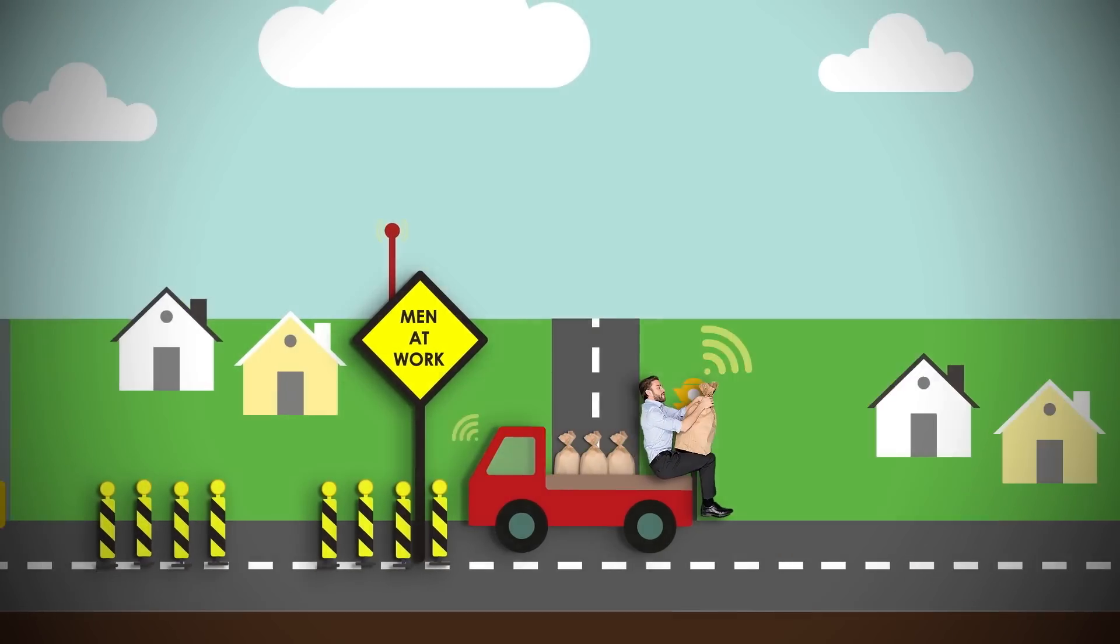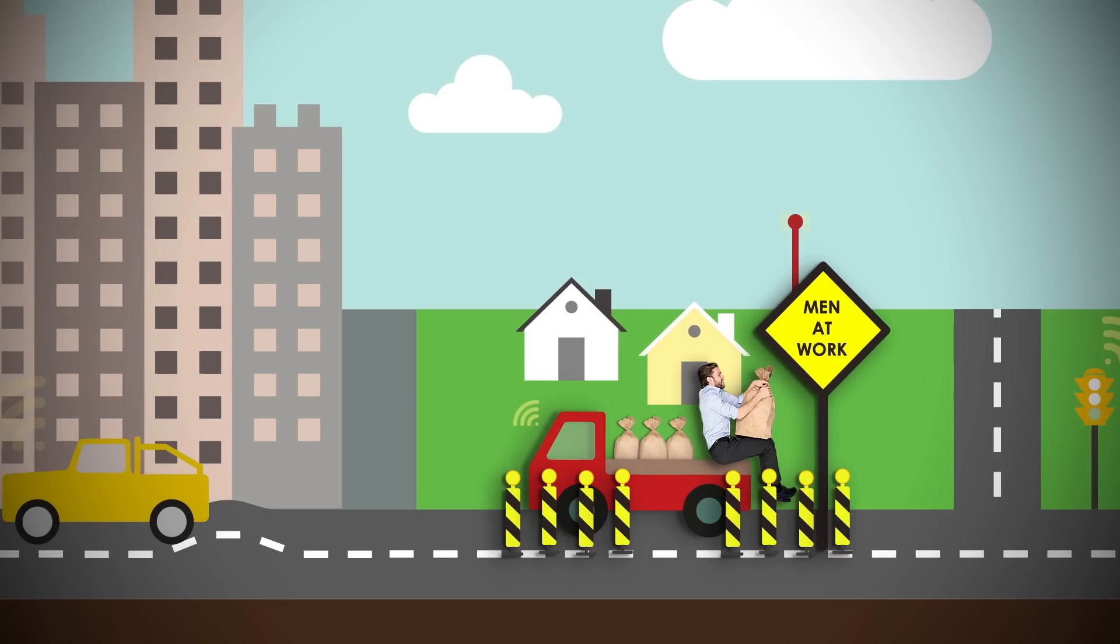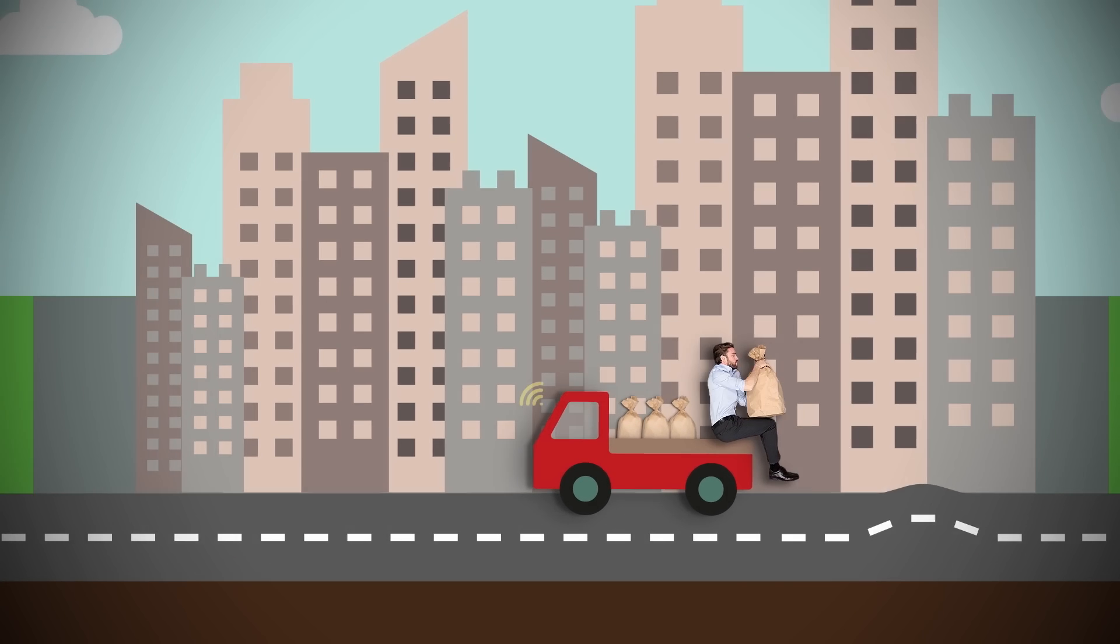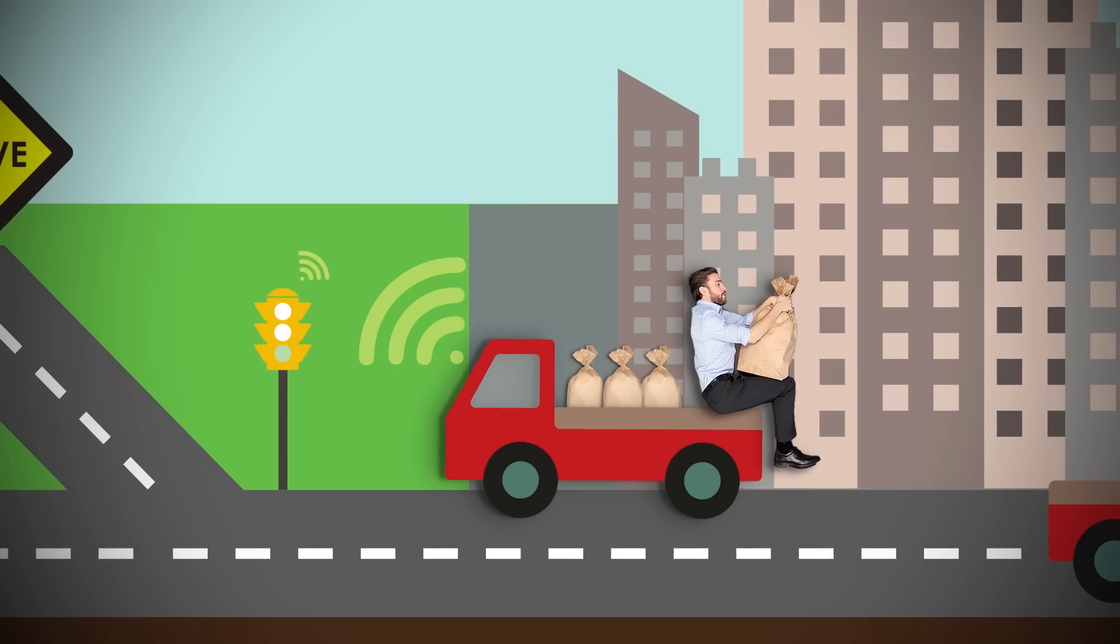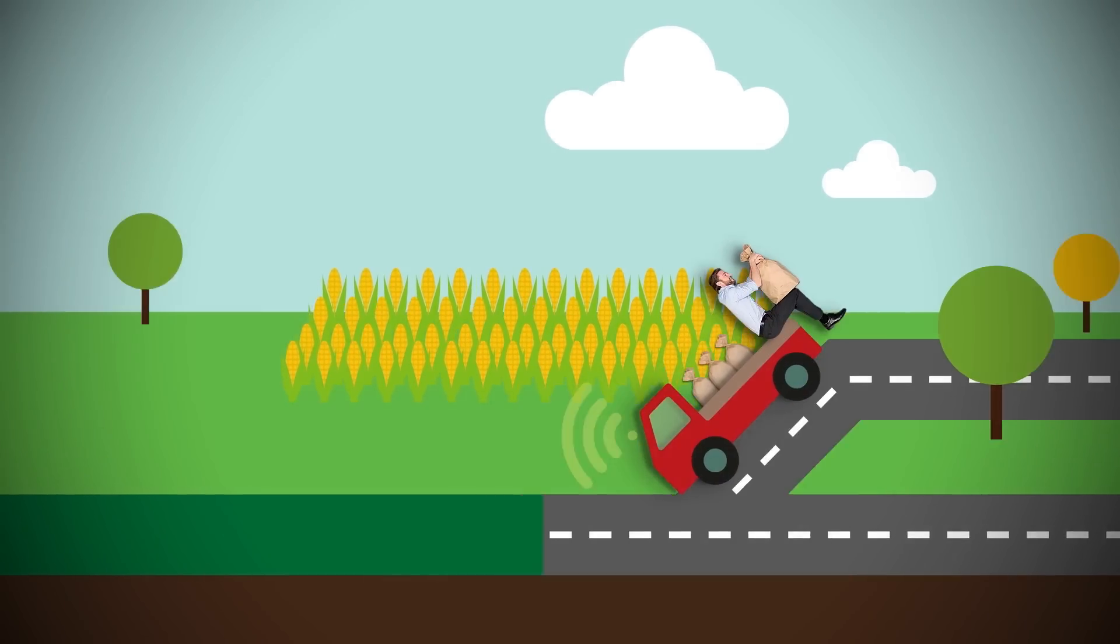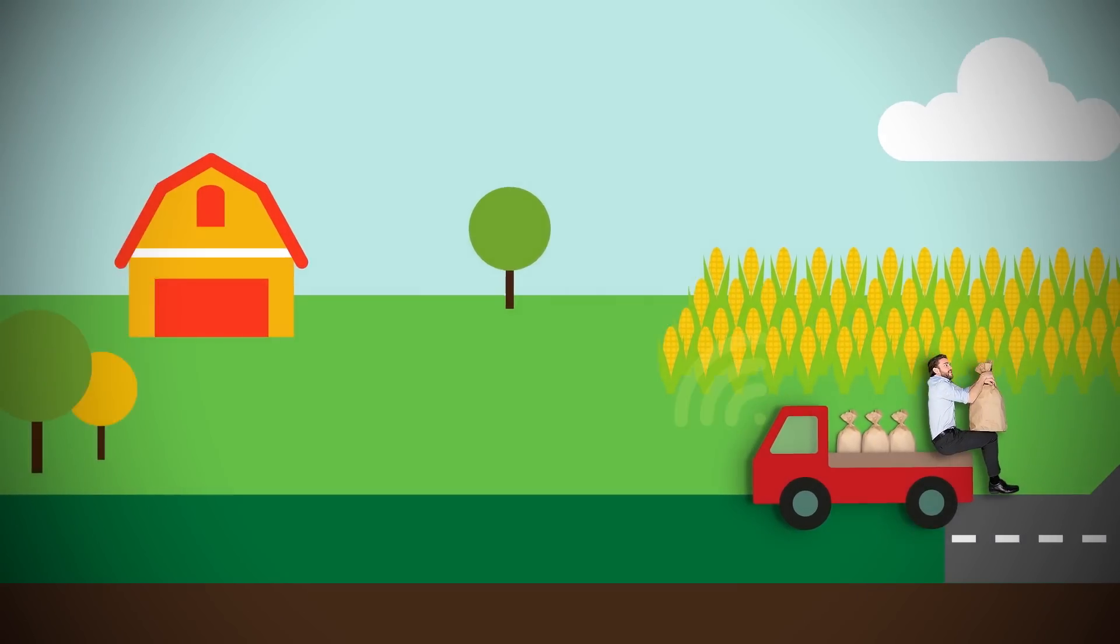Imagine a world where city authorities can gather traffic and infrastructure information to optimize urban mobility and prevent traffic jams. In this world, vehicles are automatically redirected to find the fastest, most economic and environmentally friendly way to customers.